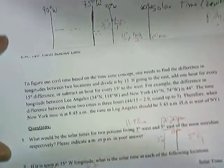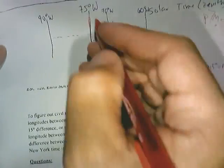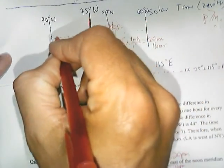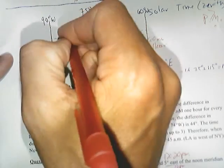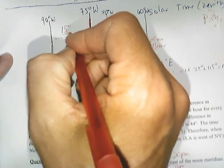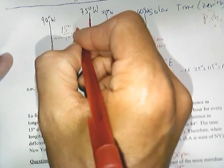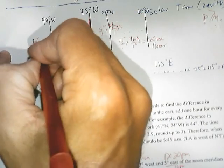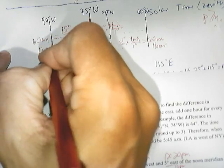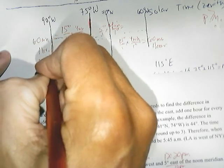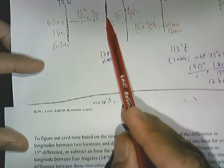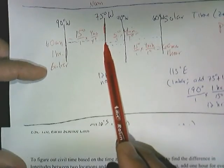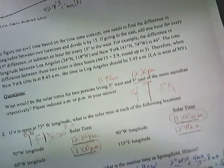Now let's look at 90 degrees west. 90 degrees west is going to be earlier in terms of solar time. So it's 15 degrees over 1 times 4 minutes per degree — 60 minutes, or 1 hour earlier. Therefore, if it's noon at the 75 degree west longitude, it's going to be 11 a.m. at 90 degrees west.